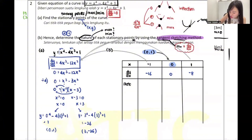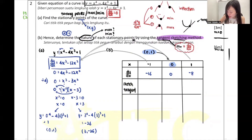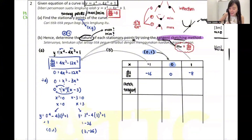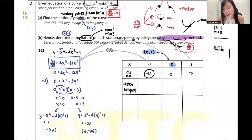Now we test the second stationary point (3, -26). Draw the same table. I'm checking x = 3, so 3 goes in the middle. Before 3 we use x = 2; after 3 we use x = 4.